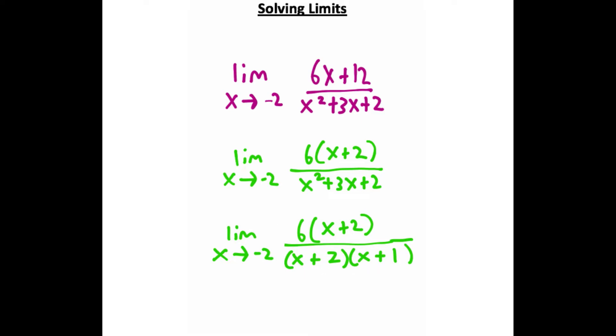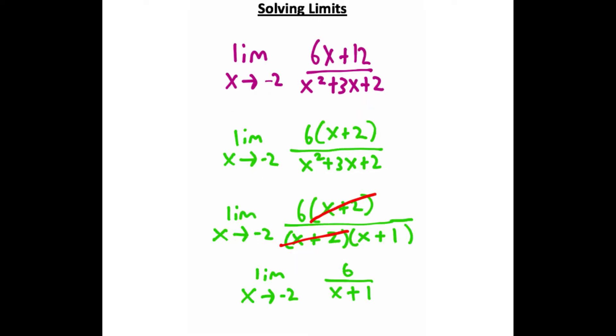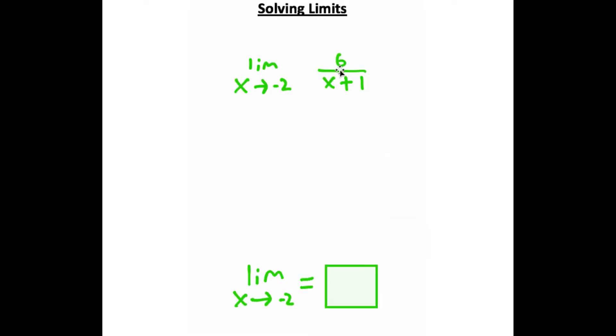Now what I can do from here is I can cancel the x plus twos, leaving me with just this expression right here. So from here, take this negative two and plug it in for x. So if I do that, I'll get six over negative two plus one, which is six over negative one, which is the same thing as negative six. So negative six is the answer to this limit right here.